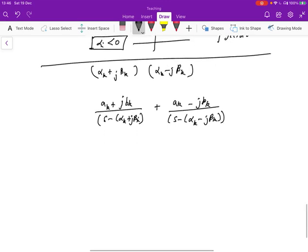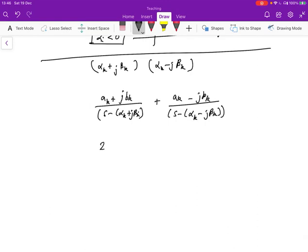And if we take the inverse Laplace transform, we'll get something that looks like this: 2 e to the alpha k t, ak cos beta k minus bk sin beta k.